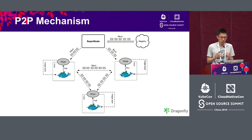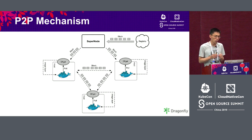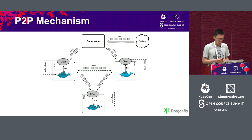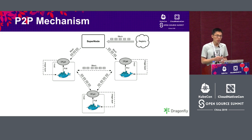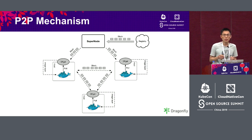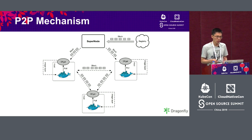One image has many layers. When all blocks of a single layer are downloaded, a container copies the file from DFGET to the local registry. Every layer is downloaded in this way. When all layers of the image are downloaded, the pull is complete. Supernode also supports resumable storage — if a download only reaches 50%, when connection is restored, Supernode only needs to download the remaining 50%, which improves download performance.